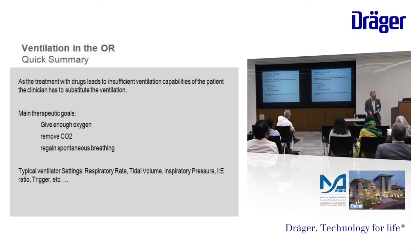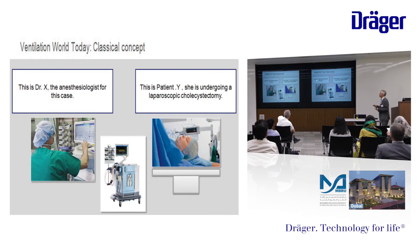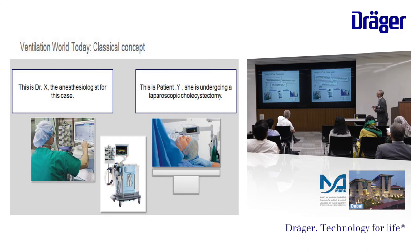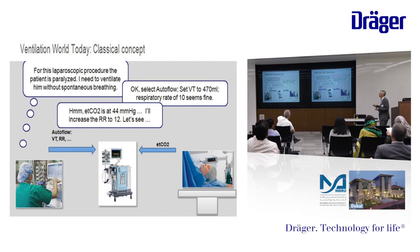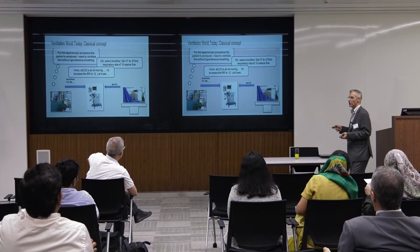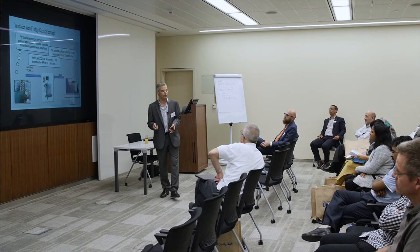So this is Dr. X, and this is patient Y, going to do laparoscopic cholecystectomy. Let us discuss what we're going to do. For laparoscopic surgery, I need to paralyze the patient — I will not keep the patient spontaneous in laparoscopic surgery. I will select autoflow, set tidal volume 470, respiratory rate — it seems fine for such a patient. Then the end-tidal CO2 will be displayed on the monitor and I discover it is 44. What do I have to do — should I increase the rate or should I increase the tidal volume?